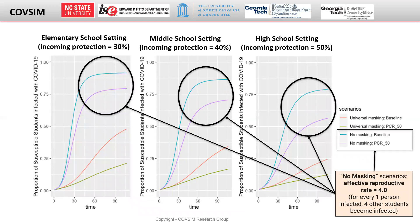The no-masking scenarios reflect disease spread with an effective reproductive rate of 4, which means for every one person infected, 4 other students become infected. This is a conservative estimate for the spread of COVID-19's Delta variant, as some estimates range from 5 to 8 — that is, for every one person infected, anywhere between 5 and 8 people become infected.